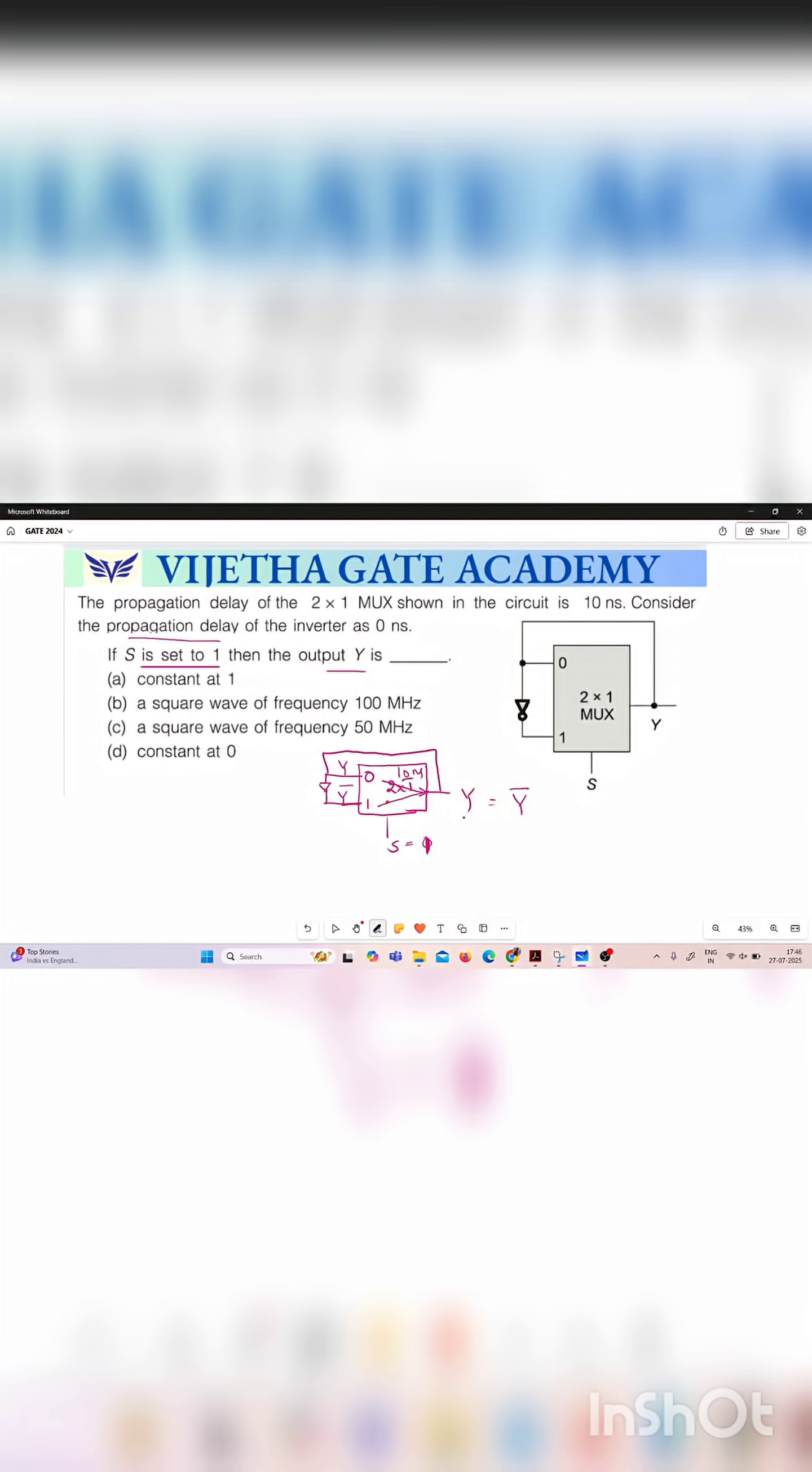So when y is equal to 0 and we are making selection line 1 this 0 will be available up to here and this 0 is converted to 1. So what is the output? We are getting 1 like this. And that 1 is again acting as a feedback here and this 1 is converted to 0. Then the output is y is equal to 0 like this.